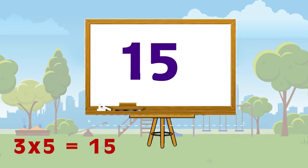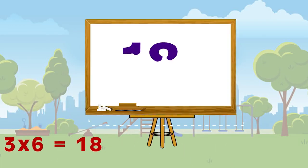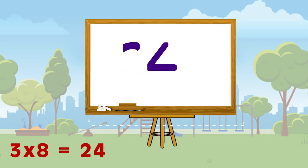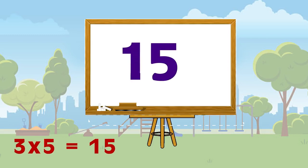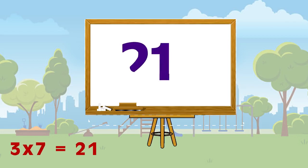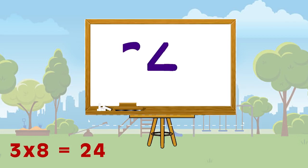Three fives are fifteen, three sixes are eighteen, three sevens are twenty-one, three eights are twenty-four. Three fives are fifteen, three sixes are eighteen, three sevens are twenty-one, three eights are twenty-four.